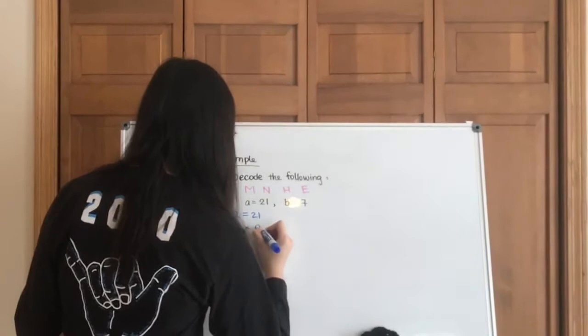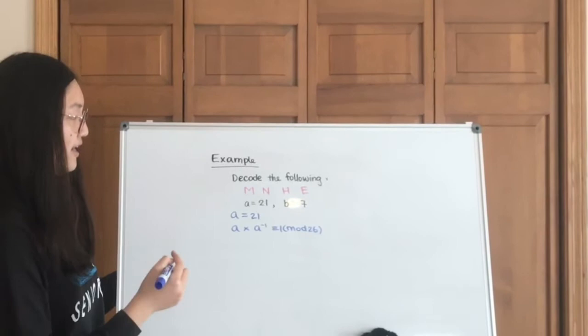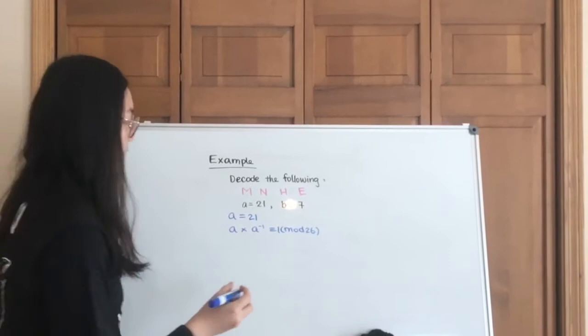So we know that a is 21, which means that a times the inverse of a is going to give us 1 in mod 26. So whatever 21 is multiplied by, its remainder when divided by 26 is going to give us 1.